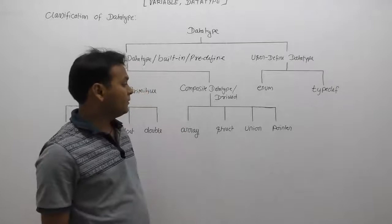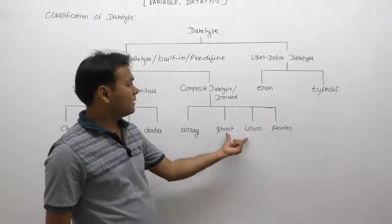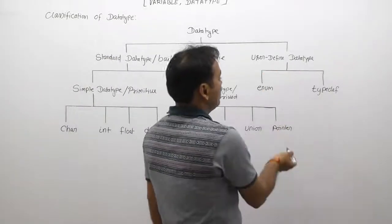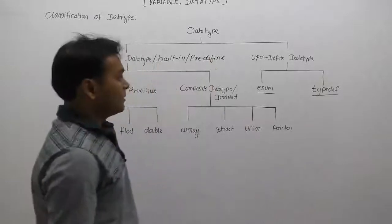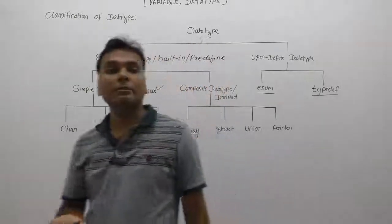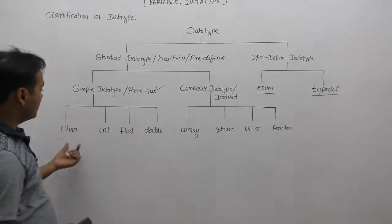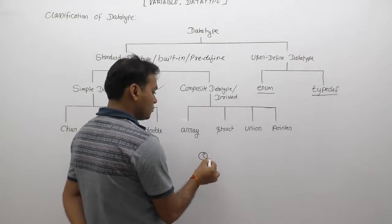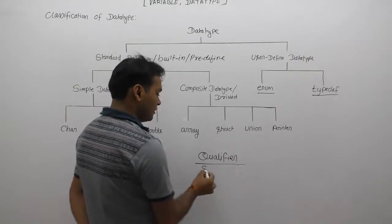Structure and union are also considered user-defined data types, but they are also composite because they are a collection of more than one type. User-defined data types can be created using enumerations or typedef. In the next session, we will discuss simple or primitive data types — the most important ones being character, integer, float, and double. Data types also have qualifiers, like 'short'. A qualifier is not a data type itself.